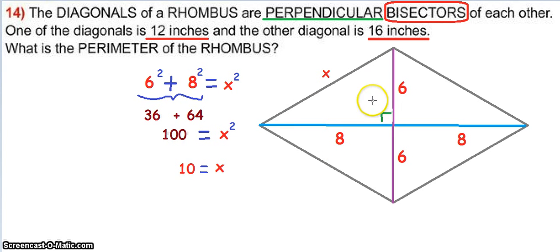If I use the Pythagorean theorem on this one triangle here, I get 6 squared plus 8 squared equals x squared, that's 36 and 64, which is 100.